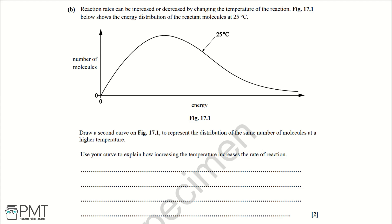Part B: reaction rates can be increased or decreased by changing the temperature. Figure 17.1 shows the energy distribution of reactant molecules at 25°C. Draw a second curve to represent the distribution of the same number of molecules at a higher temperature, then use your curve to explain how increasing the temperature increases the rate of reaction.